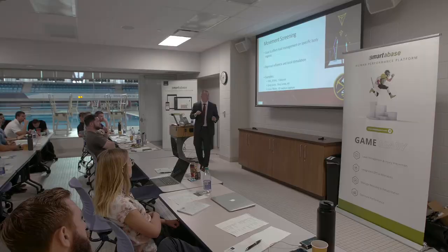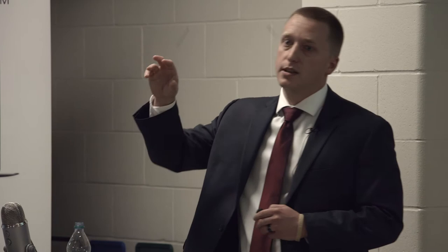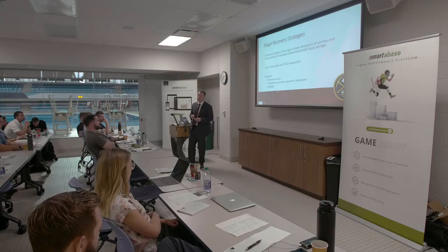Movement screening falls into regional influence and local stimulation. The goal is to effectively manage load at any segment or muscle in the body. Whether using functional movement testing like FMS, or fusionetics for a quick easy movement screen, or drop-jump and stop-jump analysis, up to force plates and 3D motion capture — for an athlete having chronic pain, we need to fill in the regional and local influence on their pain perception. But we still haven't necessarily addressed CNS modulation. If you're doing all of this and athletes aren't getting better, ask why — this is great, but it doesn't tell the whole story.